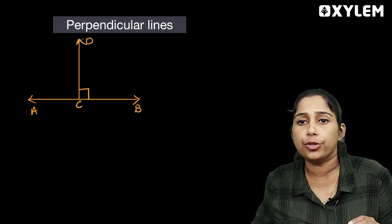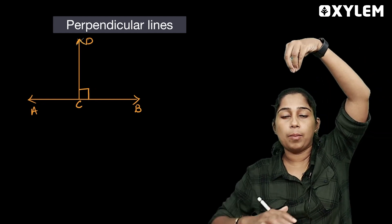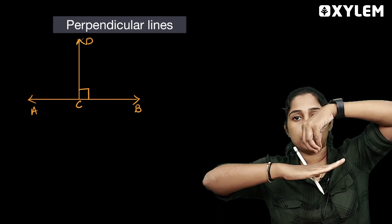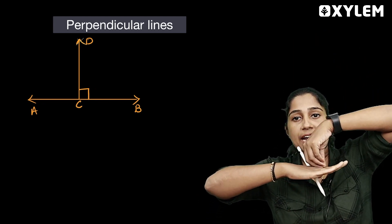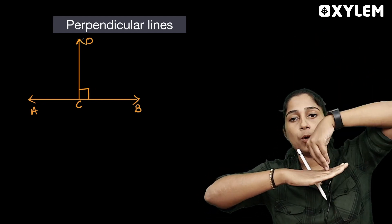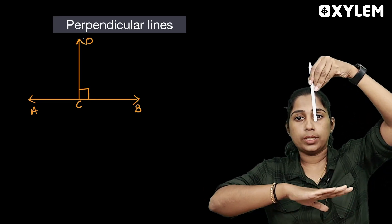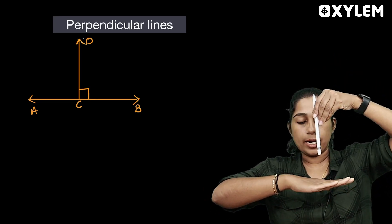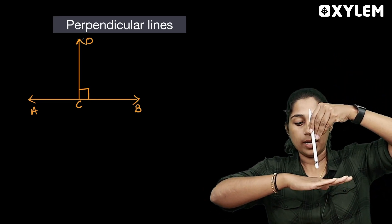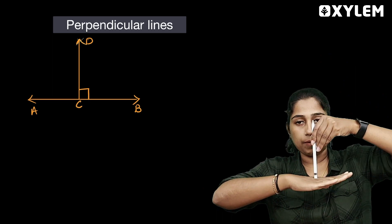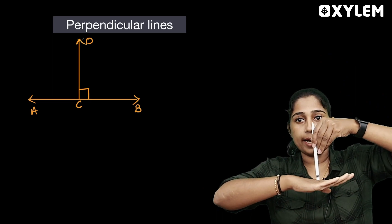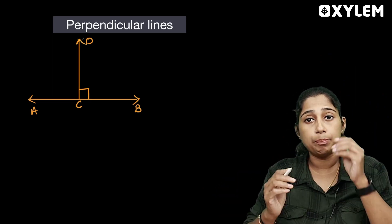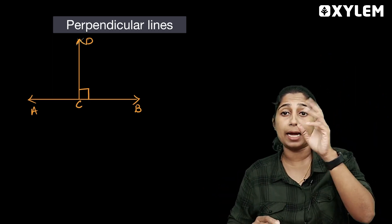Altitude: make sure the vertex drop is perpendicular to the opposite side. We drop the vertex from the line to the opposite side. It is 90 degrees — it's perpendicular. That is this particular line.